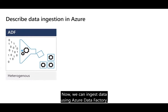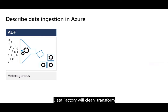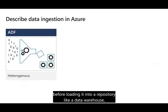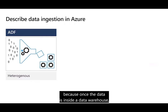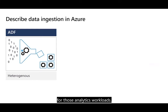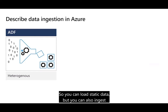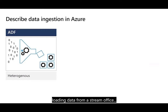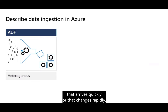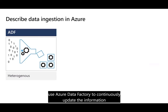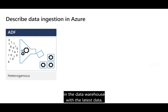We can ingest data using Azure Data Factory. As it ingests the data, Data Factory will clean, transform, and restructure the data before loading it into a repository like a data warehouse. Once the data is inside a data warehouse, we can analyze it, so we need to ensure that before we load it in, the data is ready for those analytics workloads. Data Factory contains a series of interconnected systems that provides a complete end-to-end platform for data engineers. You can load static data but also ingest streaming data, which offers real-time solutions for data that arrives quickly or changes rapidly, allowing Data Factory to continuously update the information in the data warehouse with the latest data.